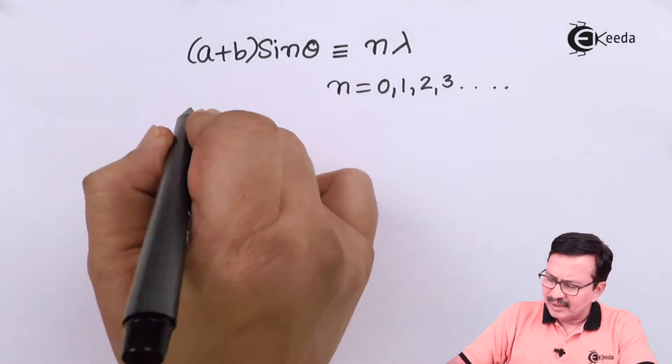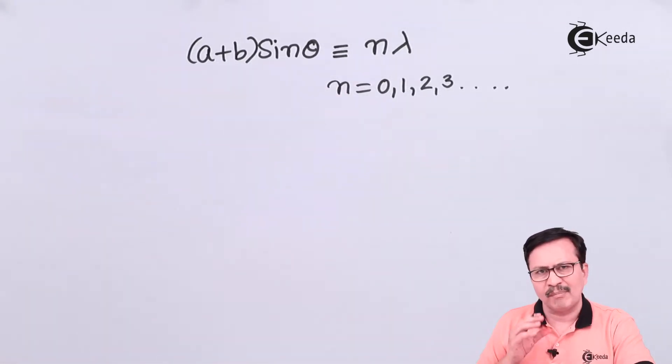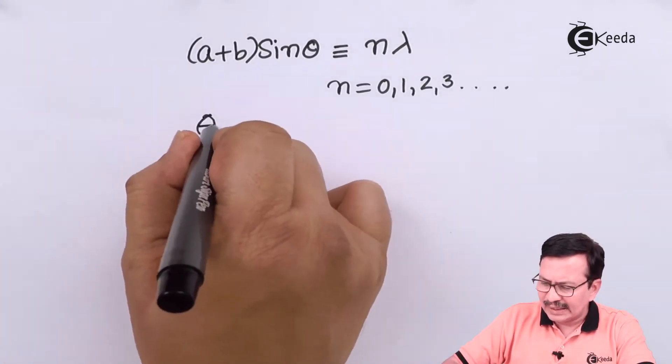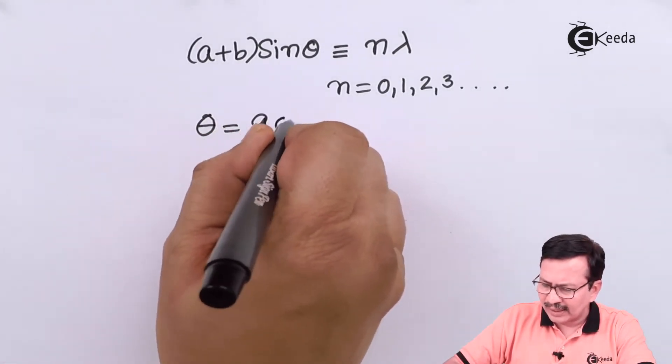So with this we now wish to find out what is the maximum order that is available in a grating. The maximum order will be available or it will be observable at the point theta is equal to 90.